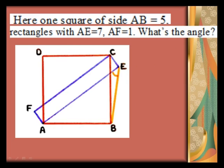A rectangle AECF with AE equals 7 and AF equals 1 is given. What about the angle AEB in the given figure? ABCB is a square.